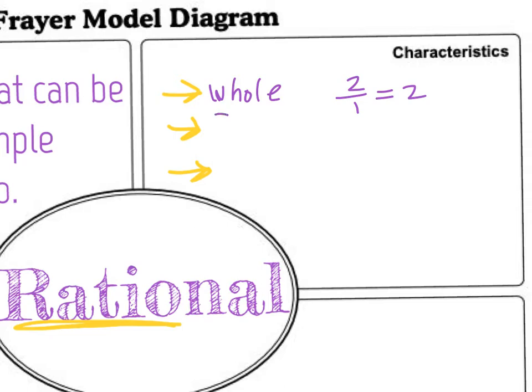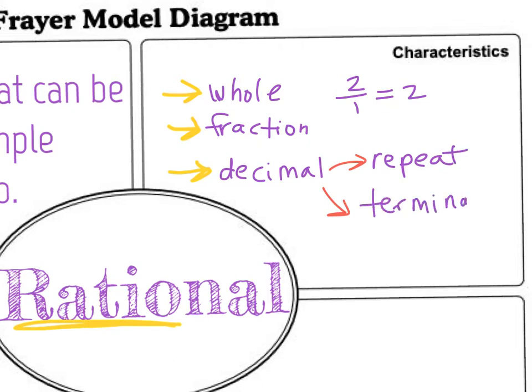A rational number is a fraction. So any time you see a fraction, it's going to be rational. Or it could be a decimal, but the decimal would have to repeat or terminate. So it could be a repeating decimal or a terminating decimal, like our last Frayer model, where terminates or stops.